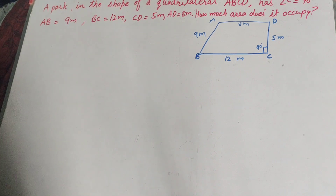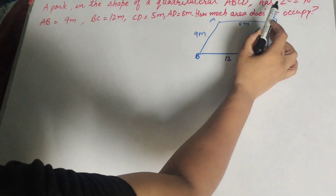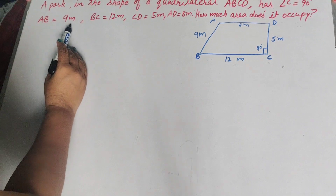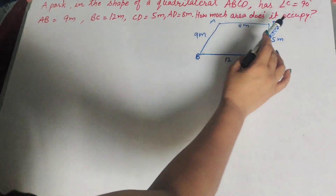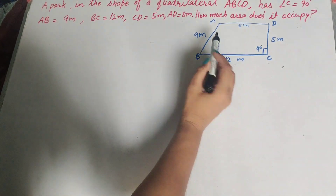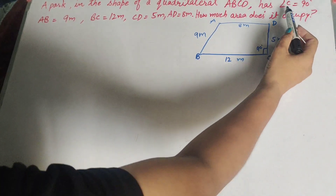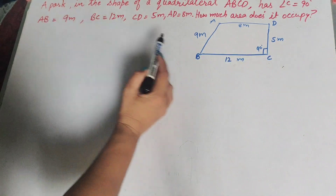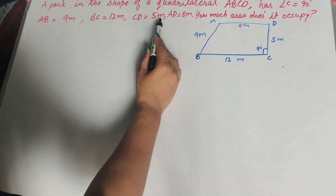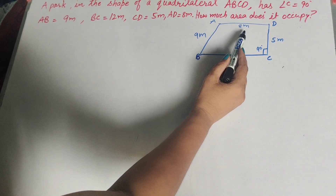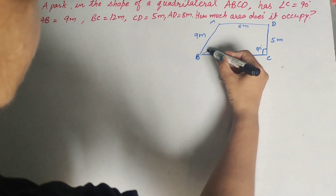Hello friends, welcome to my channel. In this video we discuss a park in the shape of quadrilateral ABCD, which has angle C equal to 90 degrees, AB equal to 9 meters, BC equal to 12 meters, CD equal to 5 meters, and AD equal to 8 meters. We need to find how much area it occupies, so we find the area of the quadrilateral.